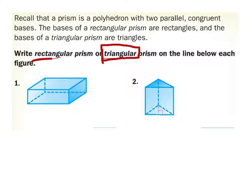We can see clearly that this one is a triangle, so this one would be the triangular prism, and this one would be the rectangular prism. But the thing is we really don't know which one is the rectangle part of this.